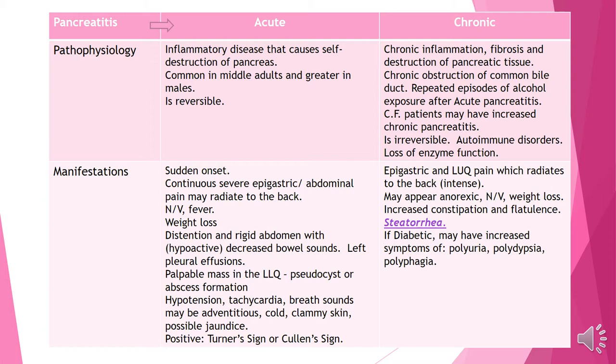Manifestations of acute pancreatitis include a sudden onset. Patients will have epigastric abdominal pain that may radiate to the back, so you may also consider a renal component. They'll experience nausea, vomiting, and fever. There will be some weight loss due to nausea. They may have a rigid abdomen with hypoactive bowel sounds and may be very distended. They're at high risk for left pleural effusions because of inflammation on the left side of the abdomen. If a mass is noted, it will be palpable in the left lower quadrant — there could be a pseudocyst or an abscess forming there.